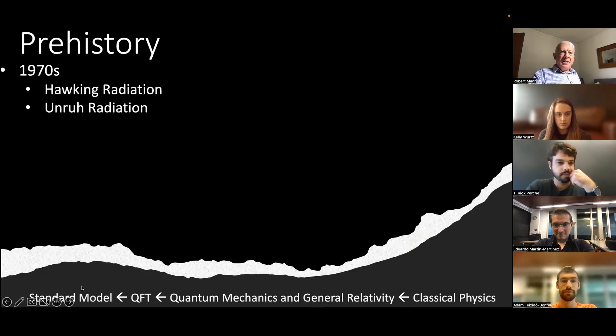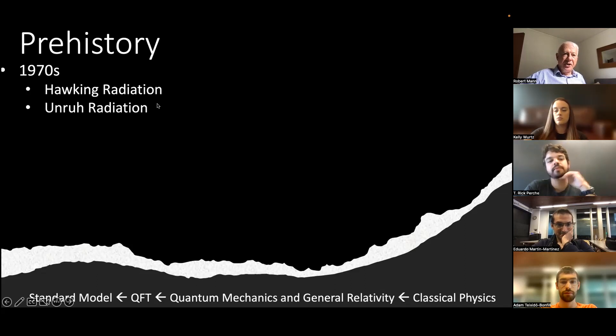Way back, we had classical physics that in the 20th century diverged into quantum mechanics and general relativity, out of which grew quantum field theory, the standard model, and gravitation. In the 1970s, two key ideas influenced RQI: black holes could radiate (Hawking radiation), and uniformly accelerated detectors respond as though they are in a thermal bath (Unruh radiation).